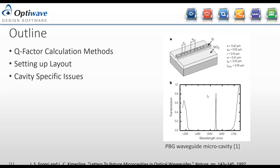We should see this type of response in the transmission spectrum: a reflection band from just over 1350 nanometers to about 1700 nanometers, and then in the middle, where the cavity is, there will be a resonance transmission peak.